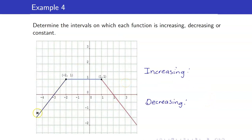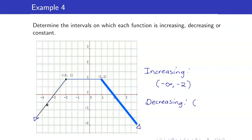Next, it is increasing here — this is negative infinity to negative 2. Take note that that portion will continue. It is decreasing here — this is 1 up to infinity. And take note that it is constant on this part of the graph, and this is the interval negative 2 to 1.